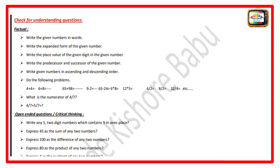For checking understanding, factual questions will be done: Write the given numbers in words. Write the expanded form of the given number. Write the place value of the given digit in the given number. Write the predecessor and successor of the given number. Write given numbers in ascending and descending order. Problems include 4 plus 4 and 6 plus 8.